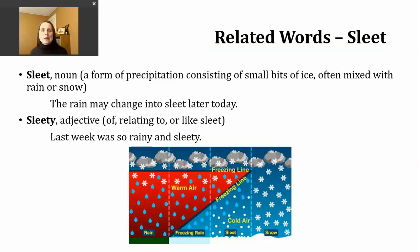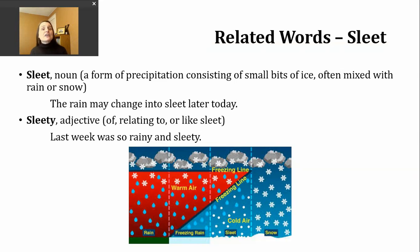Now we're going to take a look at some words related to our verb sleet. I already told you that this word can also be a noun. Sleet as a noun means a form of precipitation — liquid coming from the sky that consists of small bits of ice, and oftentimes it may be mixed with rain or snow. Here's an example of the noun form: 'The rain may change into sleet later today.'